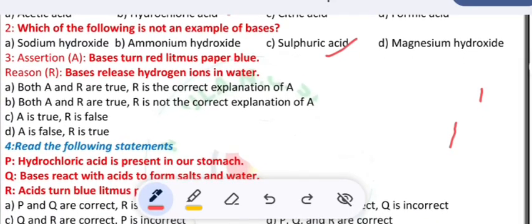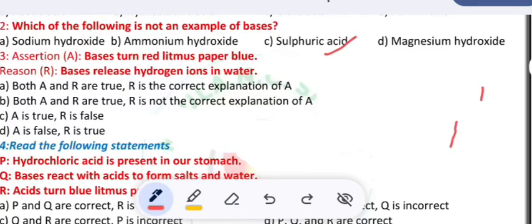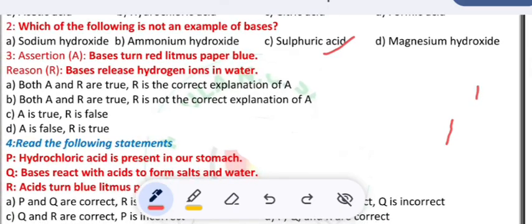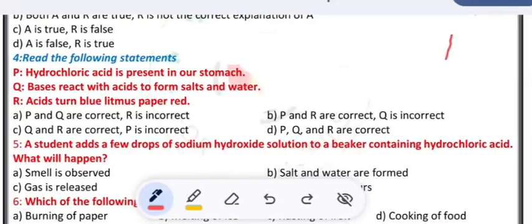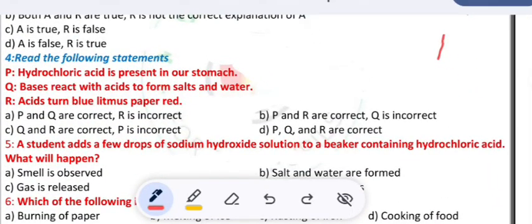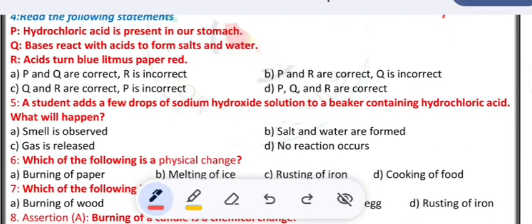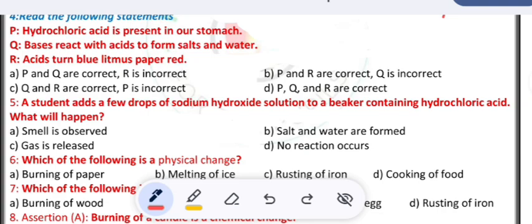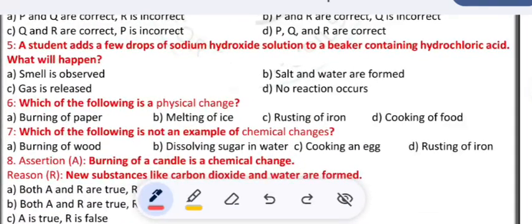Third question - Assertion A: bases turn red litmus paper to blue. Reason R: bases release hydrogen ions in water. Options are given, the correct one you can pick up. Read the following statements: P) hydrochloric acid is present in our stomach, Q) bases react with acids to form salts and water, R) acids turn blue litmus paper to red. A, B, C, D are the four options given, which one is the correct one? That option you have to write in the space provided.